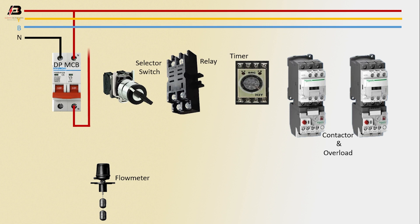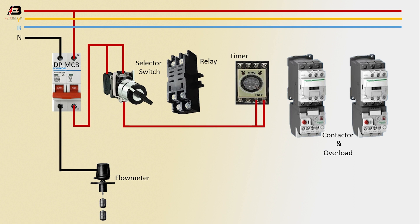Output connection from selector switch to connect timer 2 point. Neutral connection from DPMCB to connect flow meter. Neutral connection from DPMCB to connect relay. Output connection from selector switch to connect relay. Another connection to connect relay another point.